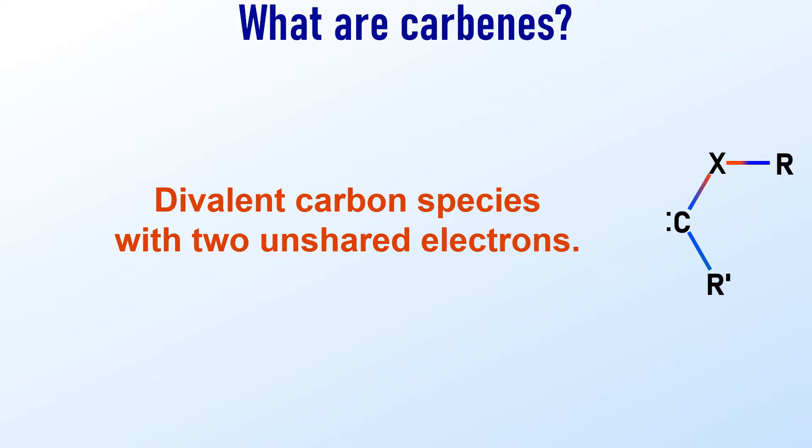The carbenes are divalent carbon species with two unshared electrons. The carbene carbon exhibits a sextet configuration in its valence shell, therefore it is a highly reactive species.